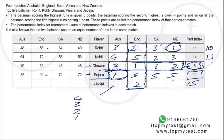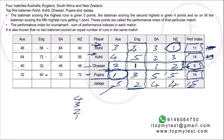With all performance indexes fixed, Jadeja's per-match performance indexes are: 5 vs Australia, 2 vs England, 4 vs South Africa, 4 vs New Zealand. Verification: 5+2+4+4 = 15. Correct. The missing indexes fill in: Jadeja gets 5 in one match, 4 in two, and 2 in one — confirmed against each opponent.